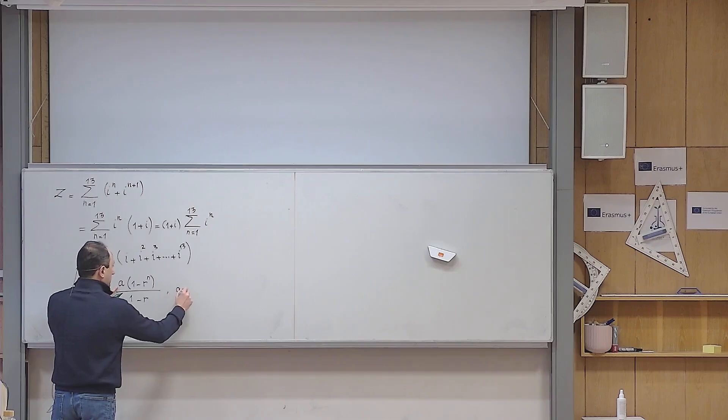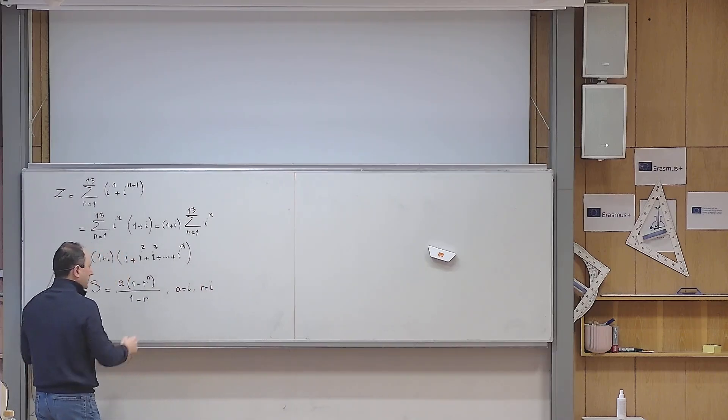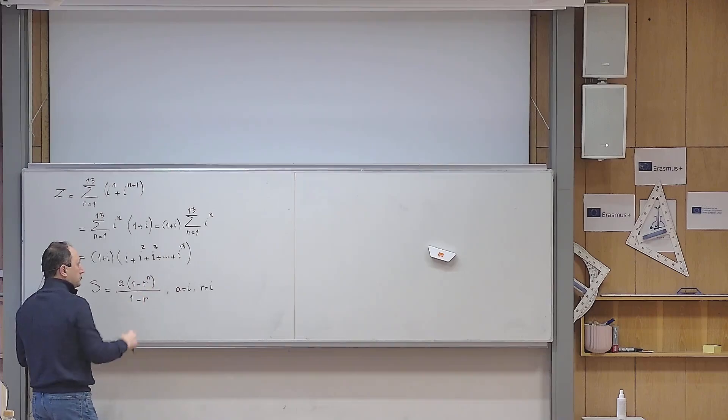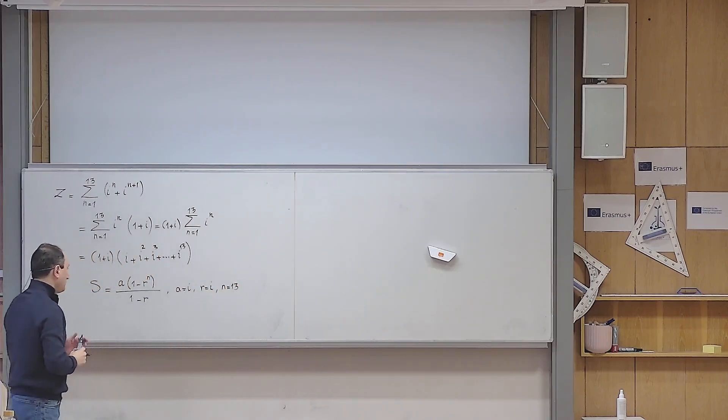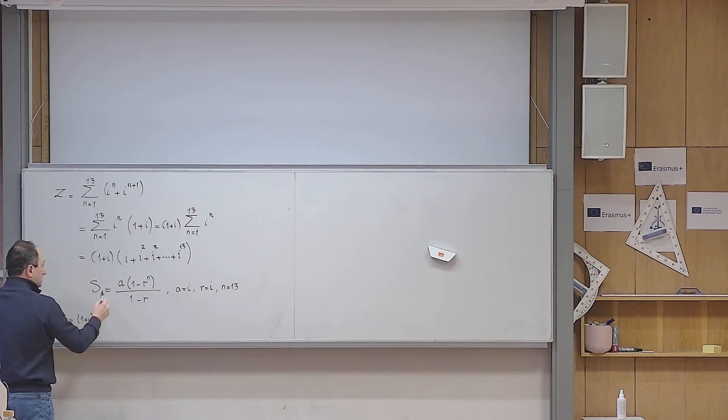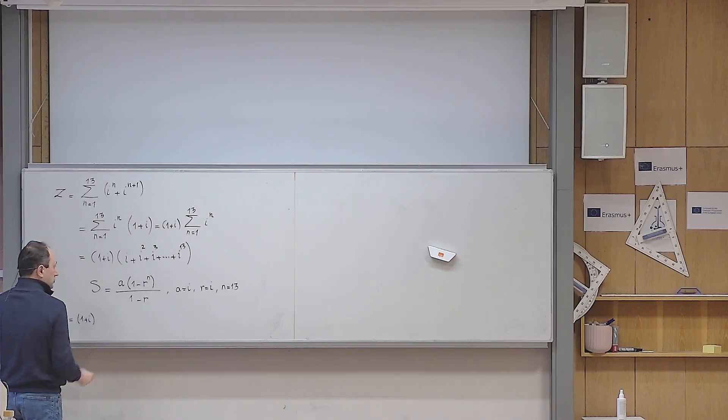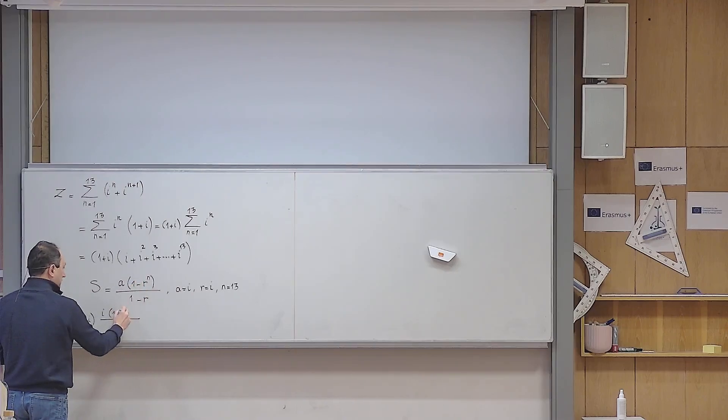a is my first term, which is i. r is the common ratio, which accidentally is i again. And n is the number of terms involved. This is from i1 up to i13, one at a time. So n is exactly 13. So z becomes equal to 1 plus i multiplied by this sum for these choices. So a is i, 1 minus r is also i, but to the power of 13, divided by 1 minus i.